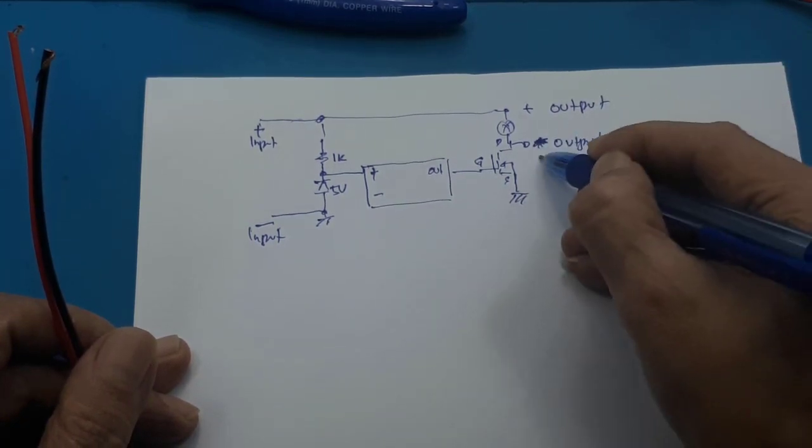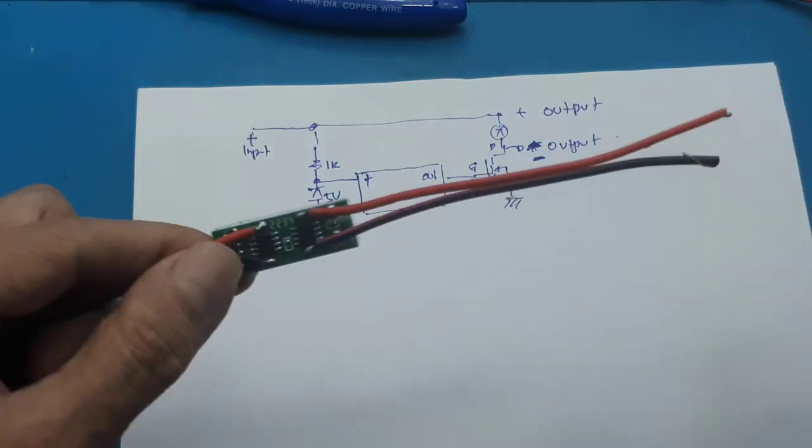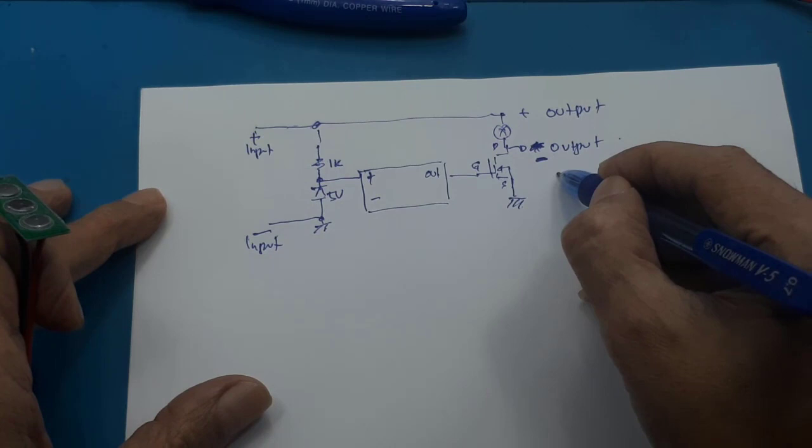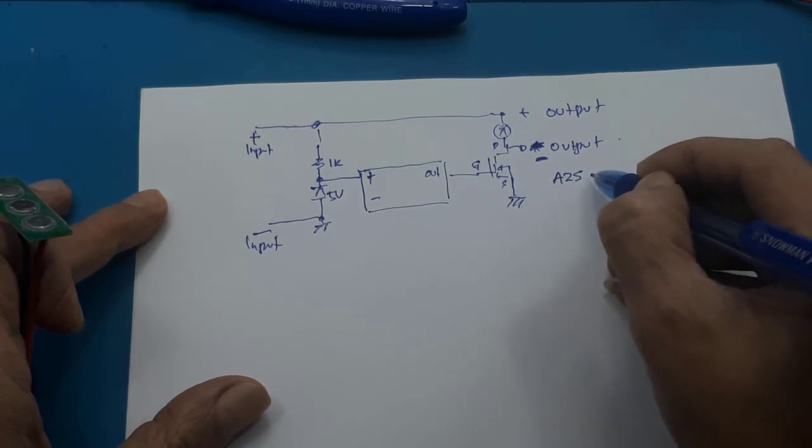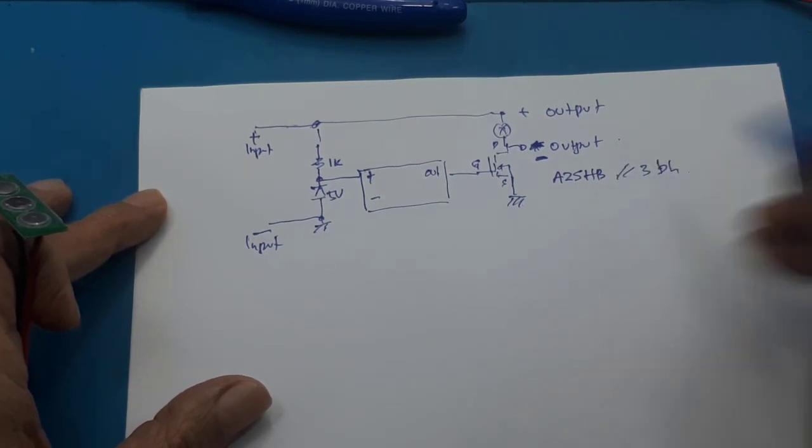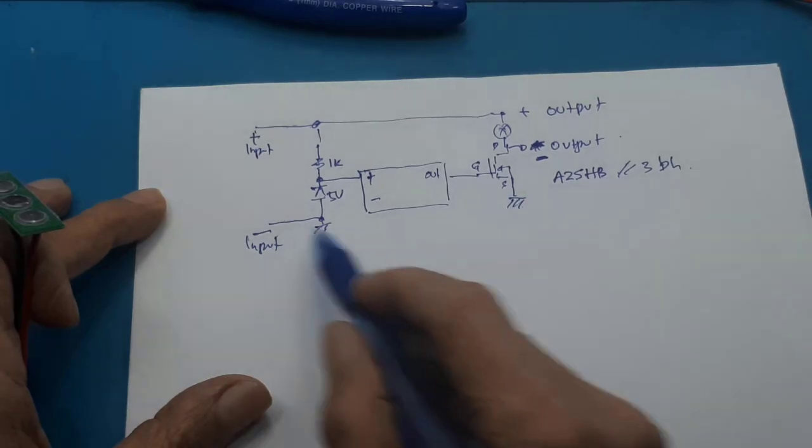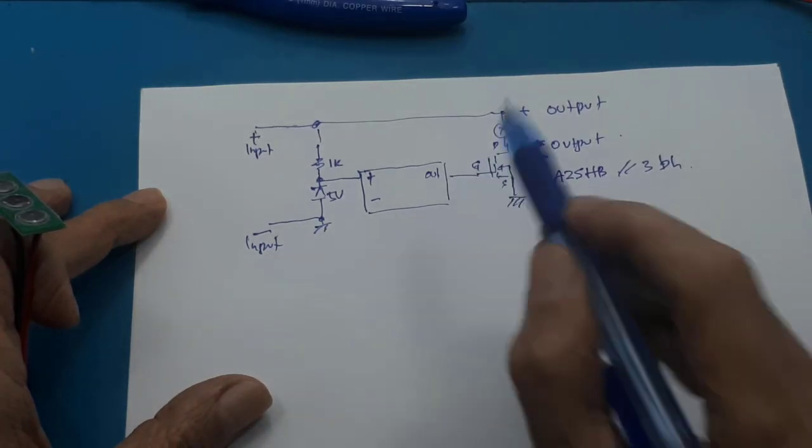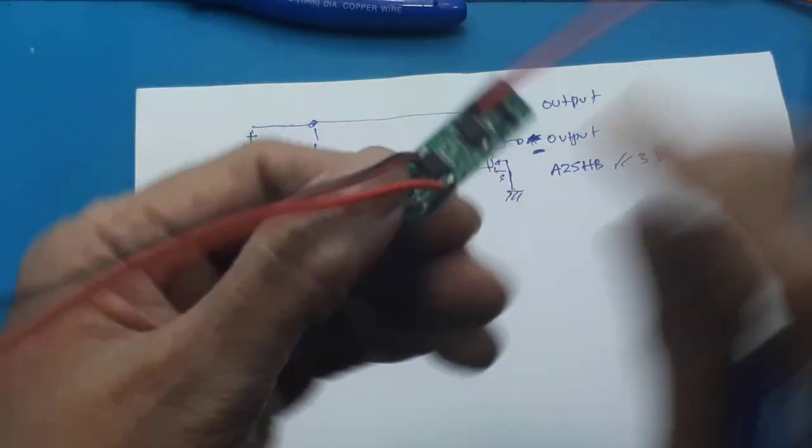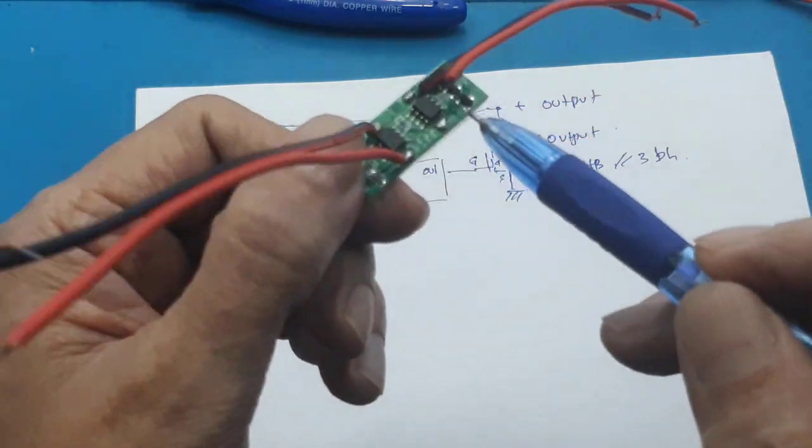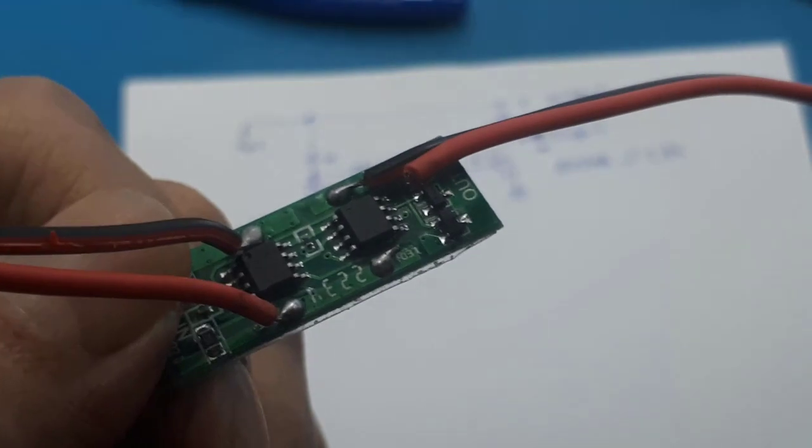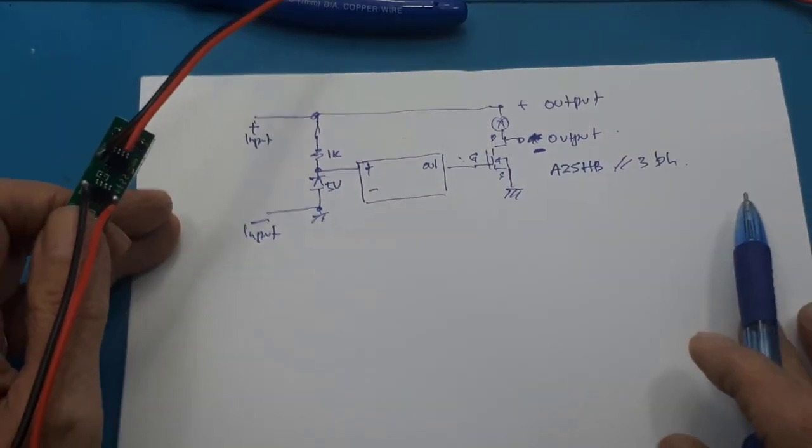Jadi bro, ini negatif, jadi outputnya ini negatif. Ini output MOSFET-nya menggunakan kemarin tipe A2SHB yang diparalel tiga buah. Paham ya bro? Jadi ini diparalel gate-nya, diparalel gate ketiga-tiganya. Ketiga MOSFET ini, G-D-S-nya diparalel.